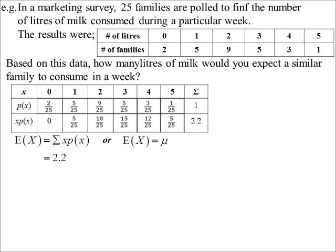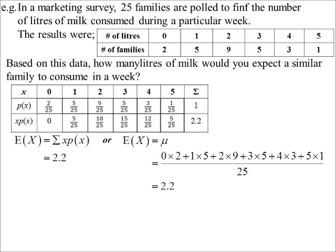Of course, the other way I could do it—remember I just said it's the same as the average. So if I wanted to work out the mean of all that, well, I'll add them all up. So there was two that had zero, five that had one, nine that had two, and so on, divided by the total number of outcomes, which is 25. And we get our average of 2.2.